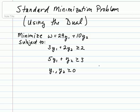Okay, so once we recognize that it's a standard minimization problem, our first thing that we'll do is convert the standard minimization problem into its dual, which will be a standard maximization problem.